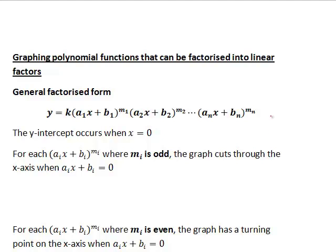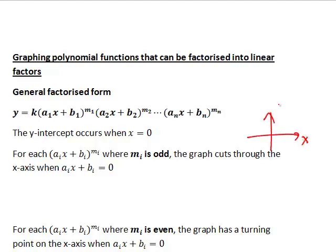Now the y-intercept of a graph, that is always where the graph cuts the y-axis. That is, it is the value of y when x equals 0. If we substitute x equals 0 into our expression here, you'll notice that a₁x will become 0, same thing through to aₙx becoming 0, which will leave us just with k times constant b₁ to the power of m₁, constant b₂ to the power of m₂ through to constant bₙ to the power of mₙ.